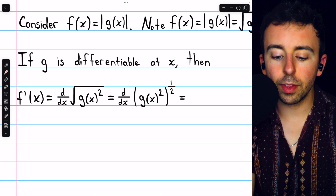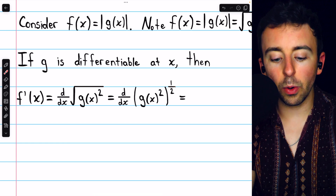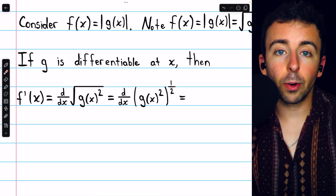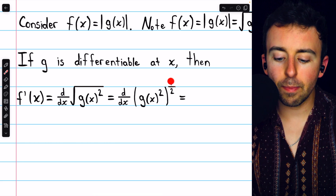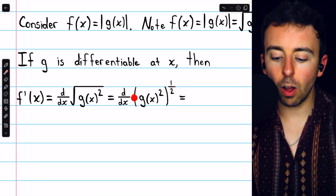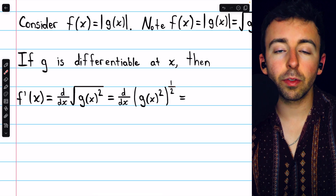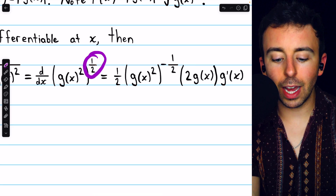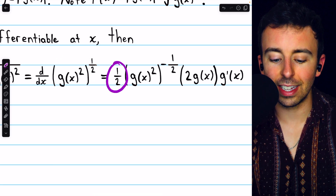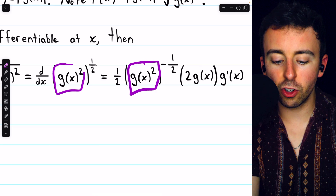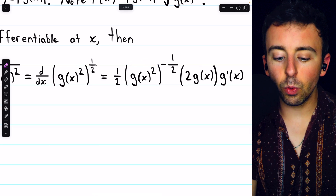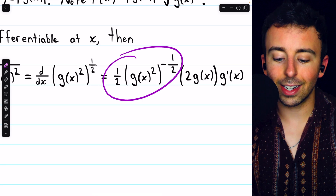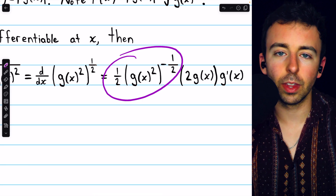We're looking for the derivative of the absolute value of g of x, but we know that's the same as the square root of g of x squared. To help us take the derivative, we rewrite that square root as a power of one half — so now we're taking the derivative of g of x squared, all to the one half. We apply the power rule: bring the power of one half down as a factor, leave the inside function unchanged as g of x squared, then subtract one from the power. One half minus one is negative one half. That's f prime in the context of the chain rule.